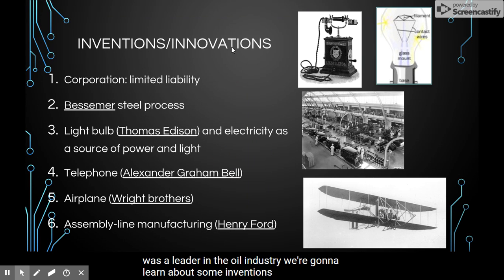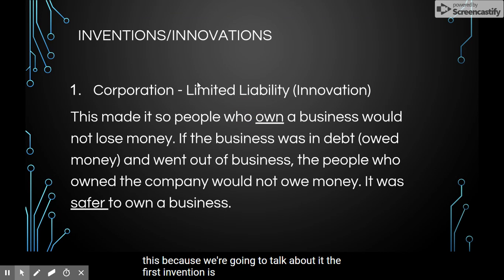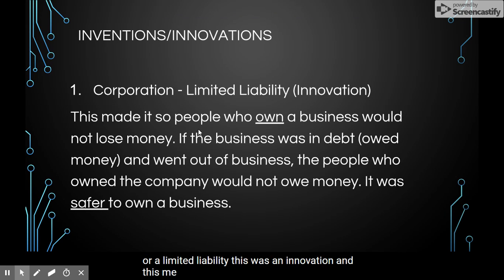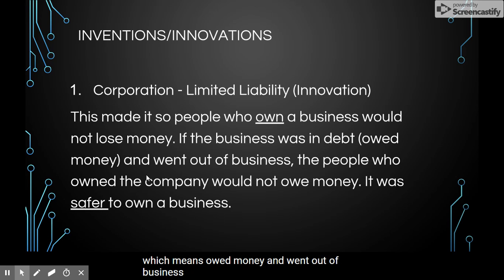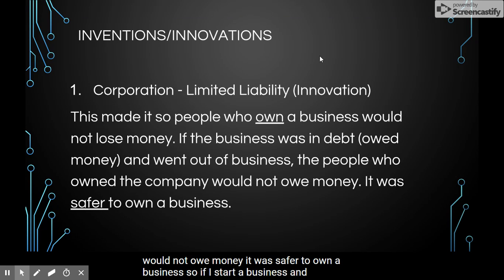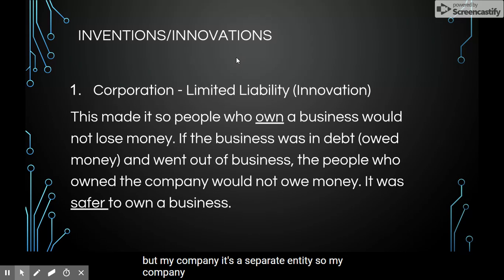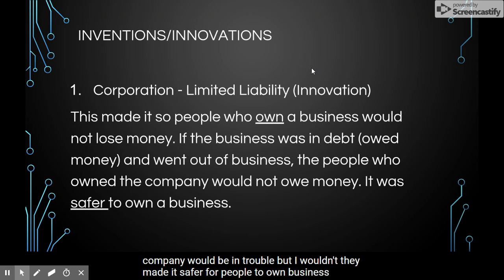Now we're going to learn about some inventions and innovations during that time. The first is something called a corporation or limited liability. This was an innovation that made it so people who own a business would not lose money if the business went into debt and closed. It was safer to own a business — if my company closes and owes people money, my company would be in trouble, but I wouldn't. My house and things I own would be safe because my company is a separate entity. It made it safer for people to own and start businesses.